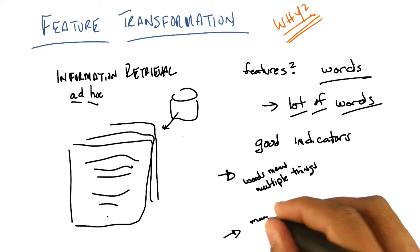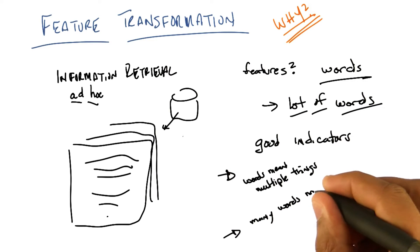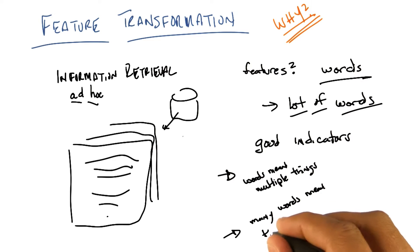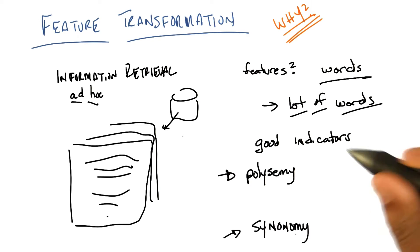Ah, yes. So that's that many words mean the same thing. And in particular, the fact that words can have multiple meanings is called polysemy. The fact that many words can mean the same thing is called synonymy.